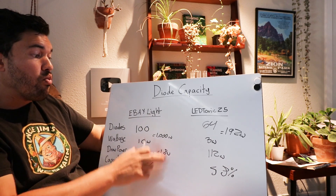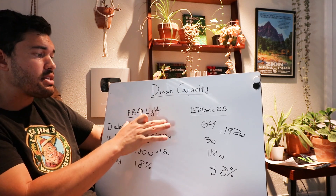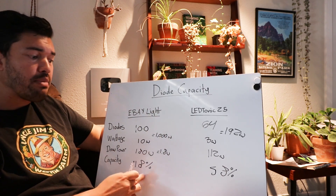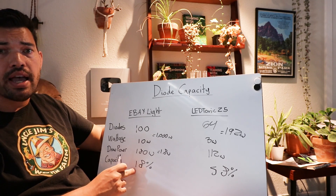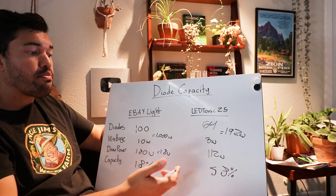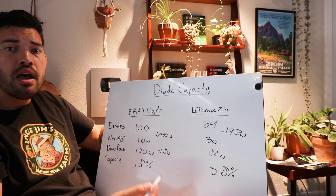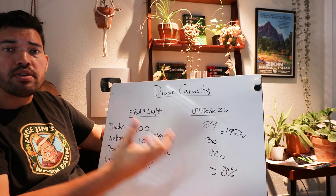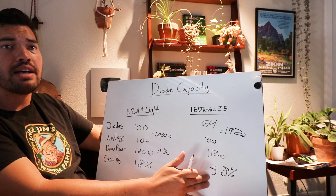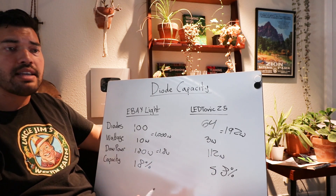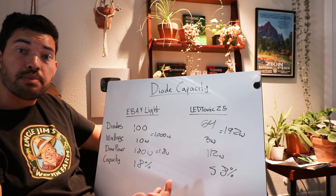If the eBay light had better thermal management and cooling, maybe they could push a little more capacity out of their diodes. But with good thermal management, good cooling practices, better fan use, and better overall design, you can push more capacity per diode — getting more efficiency out of the diodes you're actually putting in.